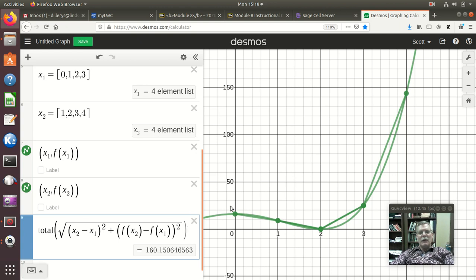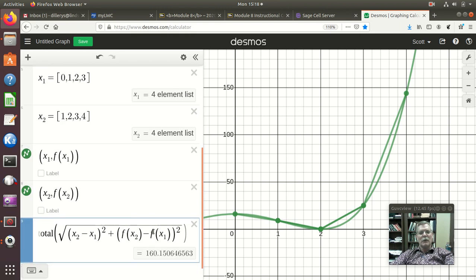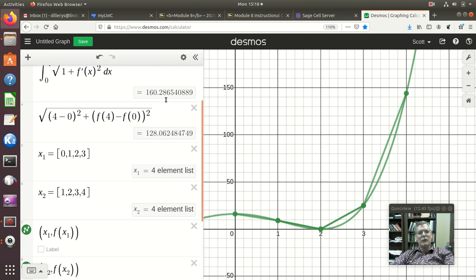And you see it's a four-element list. So it computed the lengths of each of these four pieces. Now, the question is, what's that total or sum? And actually, I can just do that by saying total and putting parentheses around this thing.